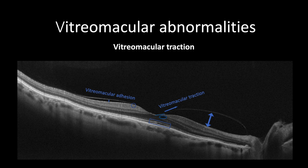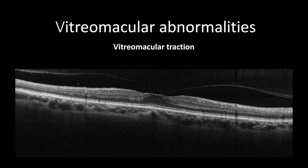In more advanced cases of vitreomacular traction, or cases associated with diabetic maculopathy, there would be an increase of central macular thickness with or without hyperreflective cystic changes or added subretinal fluid. In advanced cases, a macular detachment may occur.